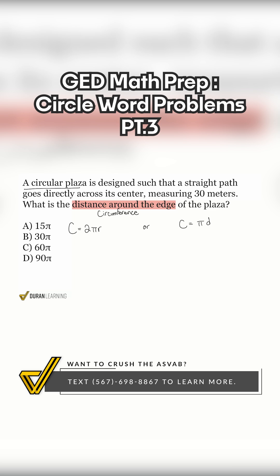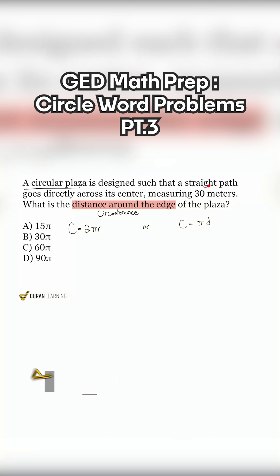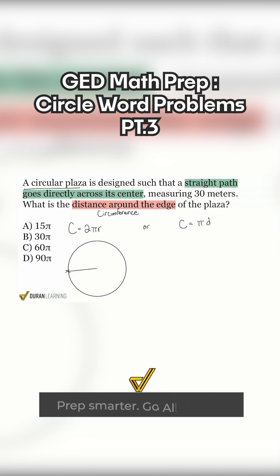Read through one sentence at a time. A circular plaza is designed such that a straight path goes directly across its center. Again, straight path goes directly across its center. Let me go ahead and draw a little circle and let's say it has a straight path that goes directly across the center.